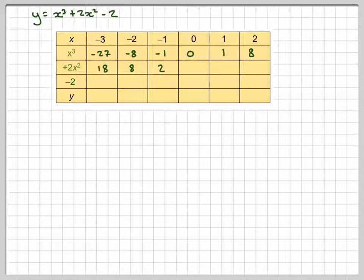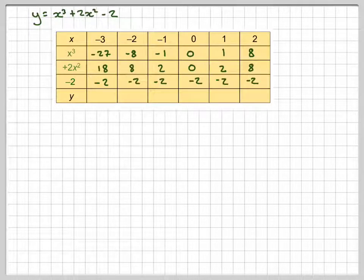0 squared is nothing, 0 times 2 is nothing. And these again will be 2 and 8. All this row here will be minus 2, because we've got minus 2 from everything.